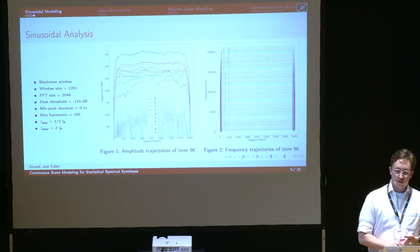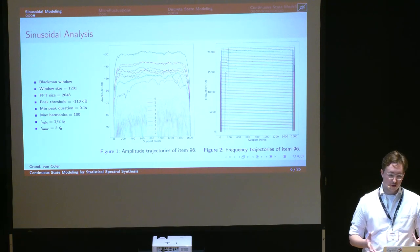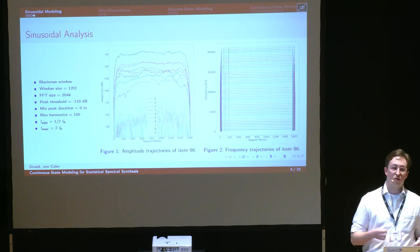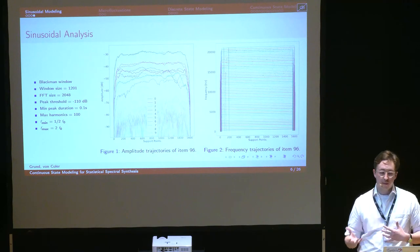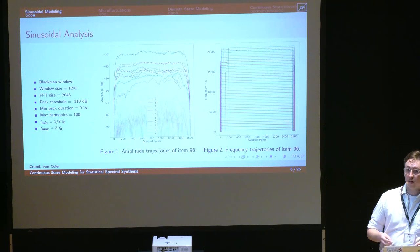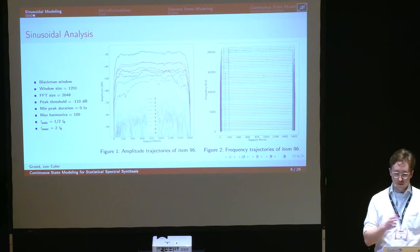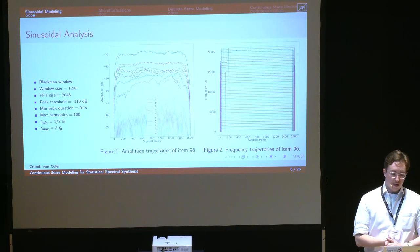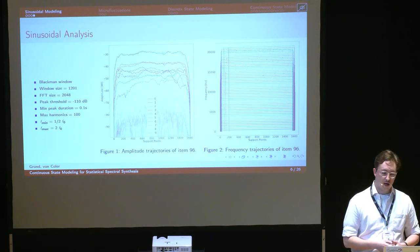Here we can see the result of the analysis of the example input sound. Input sounds were analyzed using the harmonic model of the SMS tools. The parameters include a Blackman analysis window with a window size of 1201 and an FFT size of 2048, and a magnitude threshold of spectral peaks at minus 110 decibels. The frequency F0 refers to the fundamental frequency contained in the violin sound library, so we knew it beforehand and could prepare our searching range. In the figures, we can see that fluctuations in the partial trajectories are present for both frequency trajectories and amplitude trajectories.